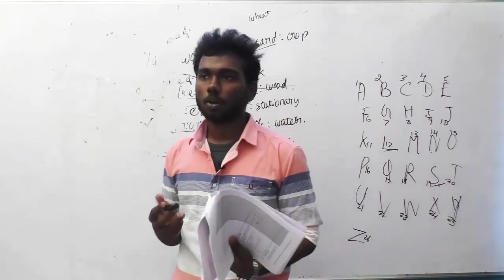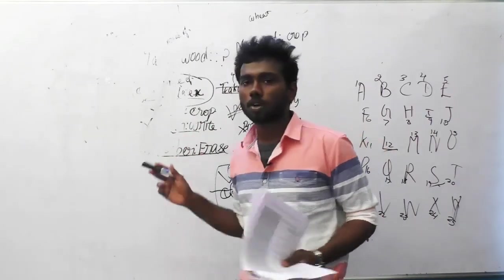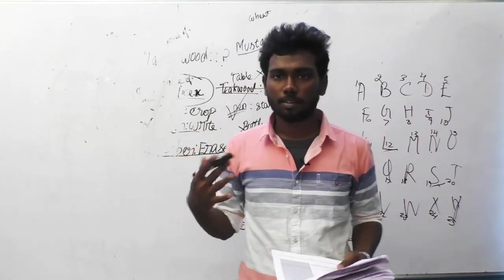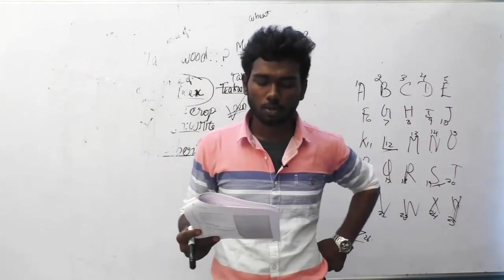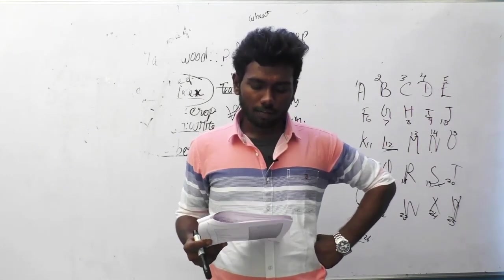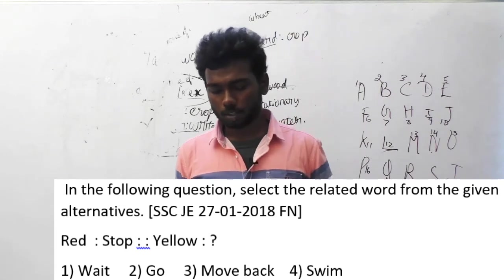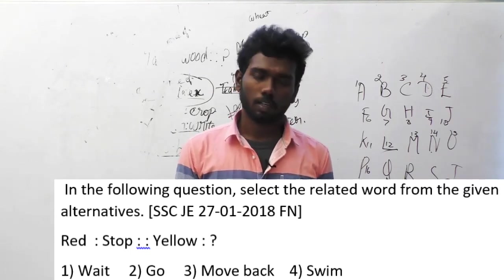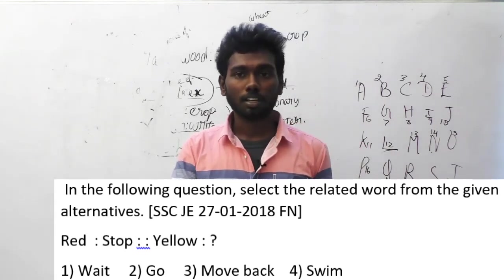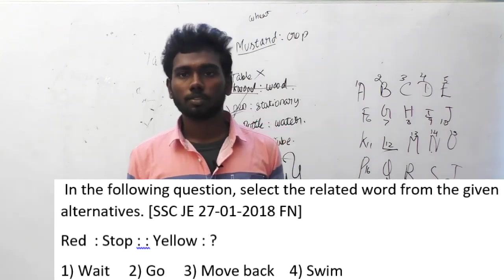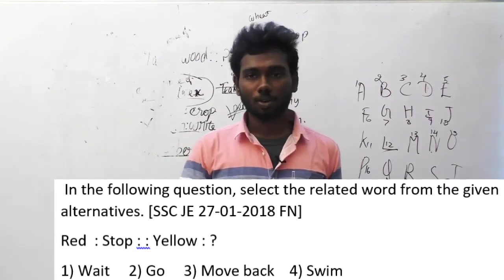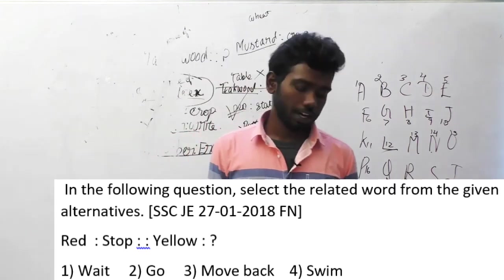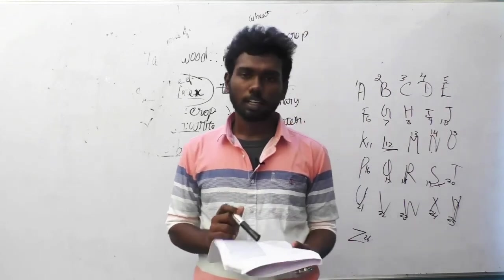Let's move on to question 151. In the following question, select the related word from the given alternatives. This question was asked in SSC JE, 27th January 2018, forenoon session. Red is to stop implies yellow is to what? This is based on traffic signals — red means stop, yellow means wait, green means go. So yellow is to wait. The answer is option A, yellow is to wait.